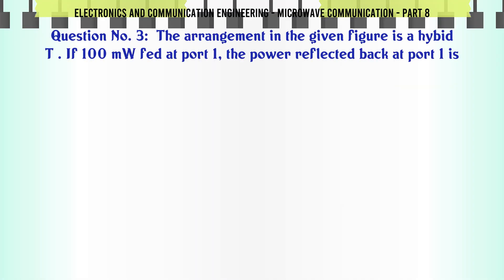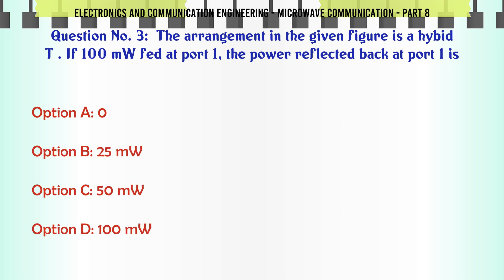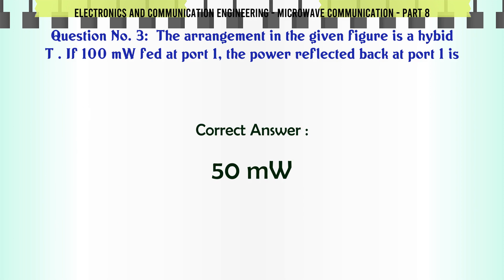The arrangement in the given figure is a 50-ohm junction. If 100 MW is fed at port 1, the power reflected back at port 1 is — A. 0, B. 25 MW, C. 50 MW, D. 100 MW. The correct answer is 50 MW.